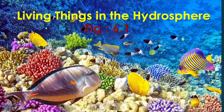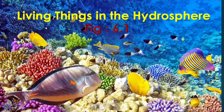Figure 6.1 in your textbook shows living things in the hydrosphere. We always see the living world around us, and there is considerable diversity in the living world on earth. The living world in the hydrosphere is many times greater than the living world on land, and it has a much greater diversity.